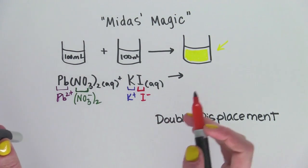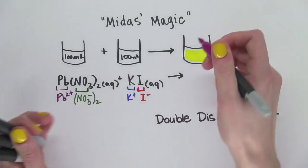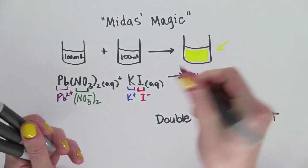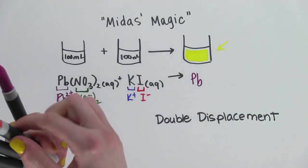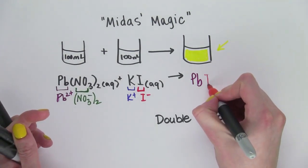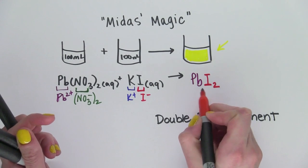When these two solutions are mixed, we've got lead, which is our plus 2. And it's going to react with iodide. We need two of them to make it a neutral compound.